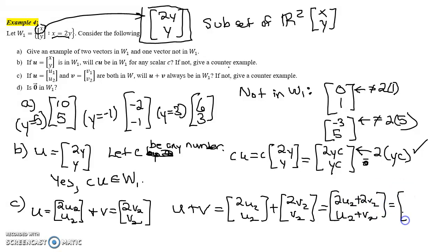But notice, I could factor out a 2 in the first component. So that's 2(u₂ plus v₂), with second component u₂ plus v₂. So this vector does have the correct form. The first component is 2 times the second component. So yes, u plus v would belong in W₁ if u and v belong in W₁.